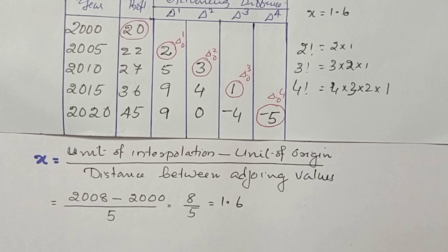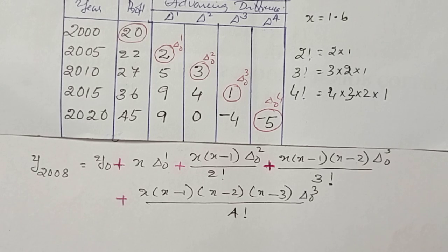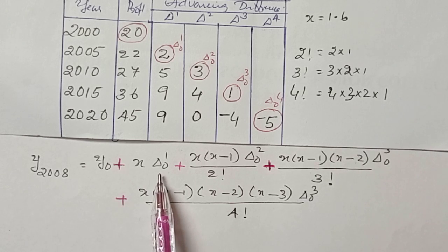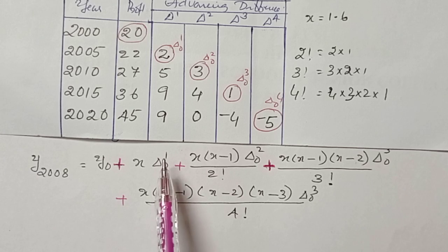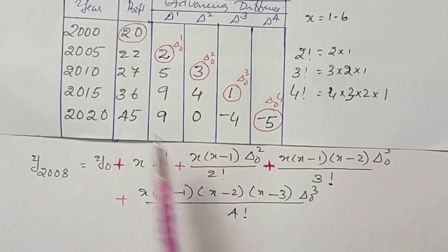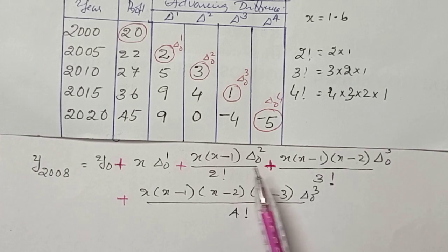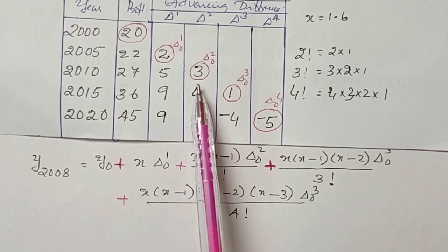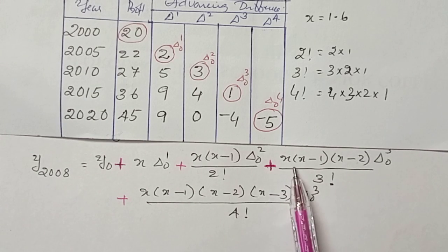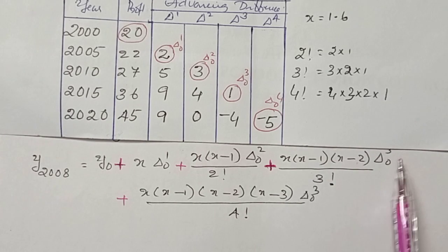Now, we got the value of x as 2008 minus 2000, divided by 5, the answer is 1.6. We can estimate the value using Newton's formula, that is y0 plus x into delta 1 plus x into x minus 1 into delta 2 divided by 2 factorial plus x into x minus 1 into x minus 2 into delta 3, divided by 3 factorial.